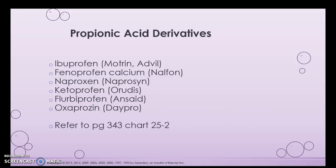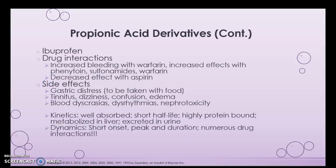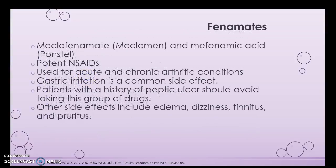Motrin, Advil, and Naproxen are medications you're going to see an awful lot in the hospital. If you refer to page 343, chart 25-2, it has a good breakdown of these medications to make your drug cards from. Again, they're not selective, so they're going to inhibit both COX-1 and COX-2. COX-1 is the protective enzyme for the stomach lining, and COX-2 drives the inflammation process. So while the inflammation is blocked, there's also no protective enzyme for the stomach. Increased bleeding can be an issue, especially with warfarin. Side effects include gastric distress — which makes sense because COX-1 is inhibited.